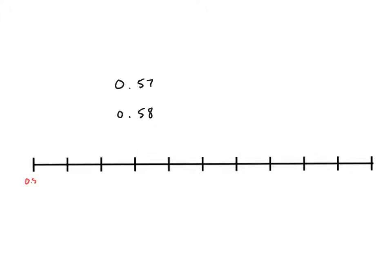Let's say I have zero and fifty seven hundredths, and zero and fifty eight hundredths. What is exactly halfway between fifty seven hundredths and fifty eight hundredths? We can visualize this on the number line, and just like we did in the previous examples when we zoomed in, we're going to make equivalent decimals. So I'm going to change this to five hundred seventy thousandths and five hundred eighty thousandths. If we think of this as five hundred seventy and five hundred eighty thousandths, the exact midpoint would be five hundred seventy five thousandths.